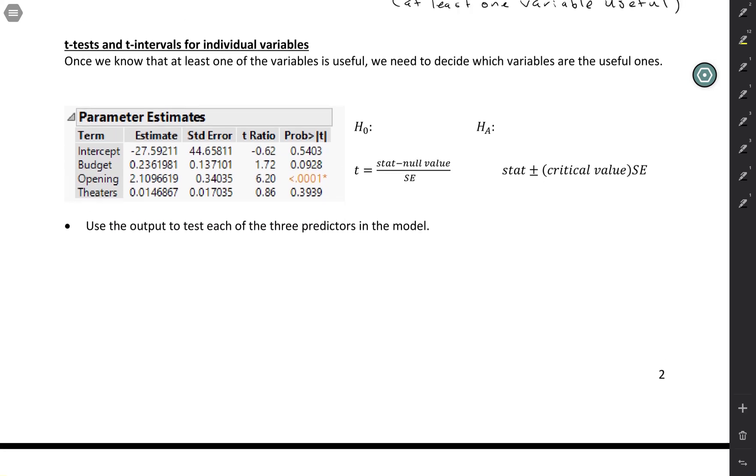So this is more output from Analyze Fit Model. This parameter estimates table looks very similar to what we've done in simple regression, except notice that we have multiple slopes here, because we have three different predictors, and so we have three different slope values. We also have some information in this table. So standard error, obviously that's the standard error. The t-ratio, that's our t-statistic. And then here where it says probability greater than t, this is our two-sided p-value for each one.